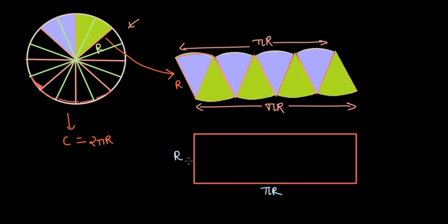And so ultimately, in the case where we have infinite pies, we will be able to approximate the area of a circle by a rectangle of side r and pi r. And the area of this rectangle is r times pi r which is pi r square. And therefore, the area of this circle is also pi r square.